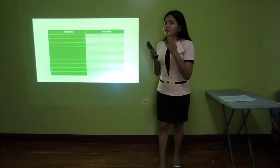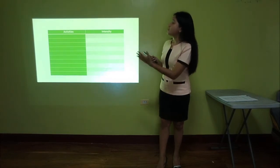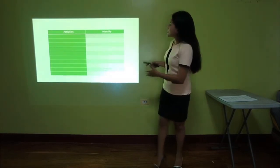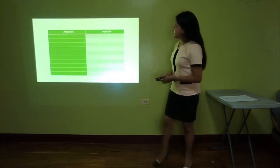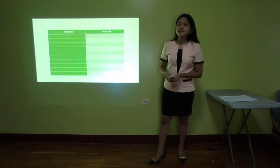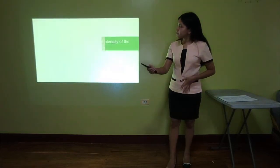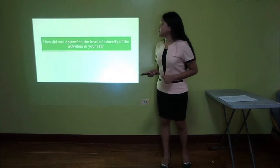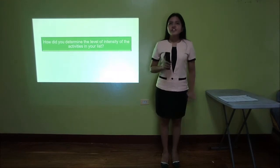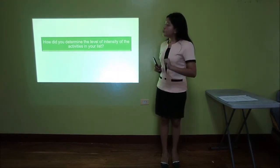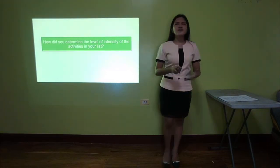You will only be given 5 minutes to do this. In your group, make a summary list of the activities that you do every day. Beside the activity, you will write your assumed level of intensity of each activity. And then afterwards, you will answer the common question: How did you determine the level of intensity of the activities on your list? Time's up. I need two members of each group to present their output. Thank you for sharing your answers.